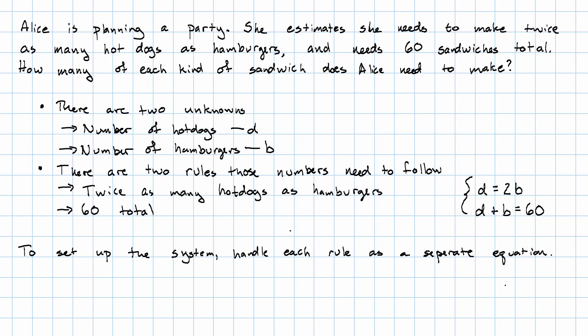Now, maybe you can guess the solution here. We'll learn more complicated techniques than guessing in the upcoming lessons. We might guess the solution is D equals 40, B equals 20. That is, make 40 hot dogs and 20 hamburgers.